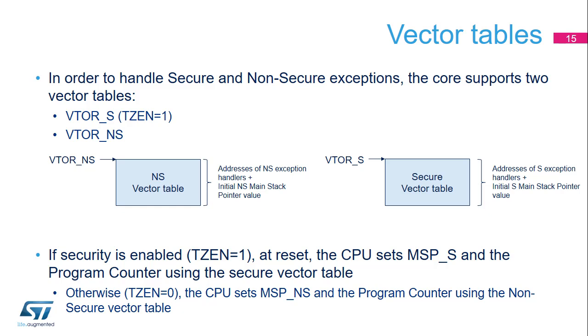When TrustZone is disabled, a unique vector table is used because the core only runs in non-secure state.